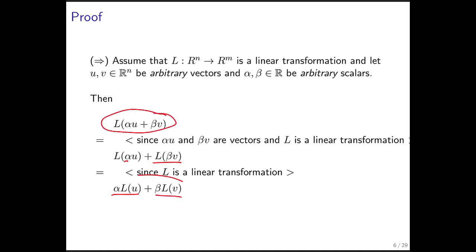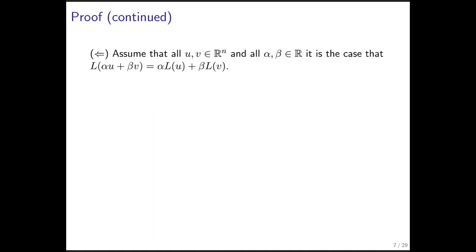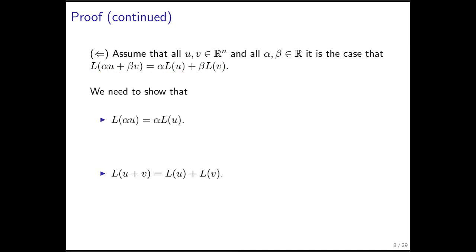That proves the result we wanted — we showed this expression equals that one. Now we have to prove it the other way: we assume this holds for all u, v, alpha, and beta, and we want to show that L is a linear transformation. We need to prove that scaling then transforming equals transforming then scaling, and that adding then transforming equals transforming then adding. The first result follows by choosing beta to be 0.